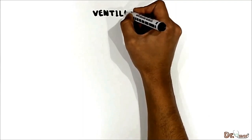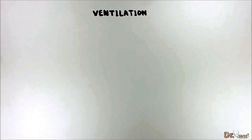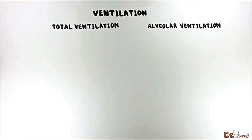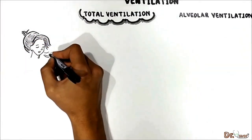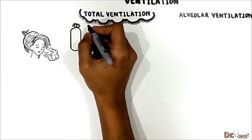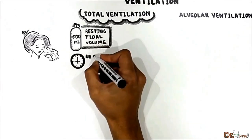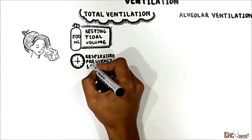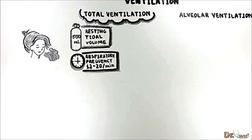Let's talk about ventilation. In respiratory physiology, ventilation is the movement of air into and out of the respiratory system by inhalation and exhalation. It is extremely important to differentiate between total ventilation and alveolar ventilation. During normal quiet breathing, the volume of air inspired and expired with each breath is approximately 500 mils — this is known as the resting tidal volume. The normal resting respiratory rate is 12 to 20 breaths per minute.